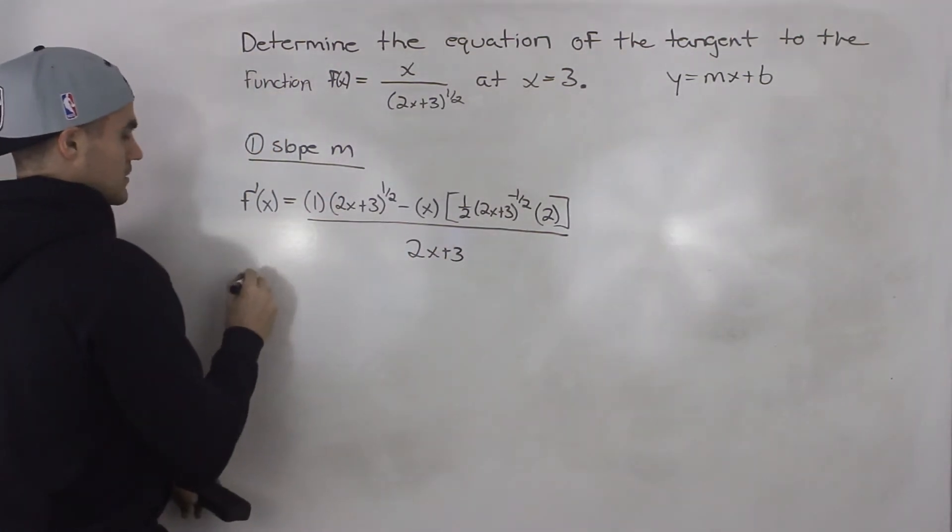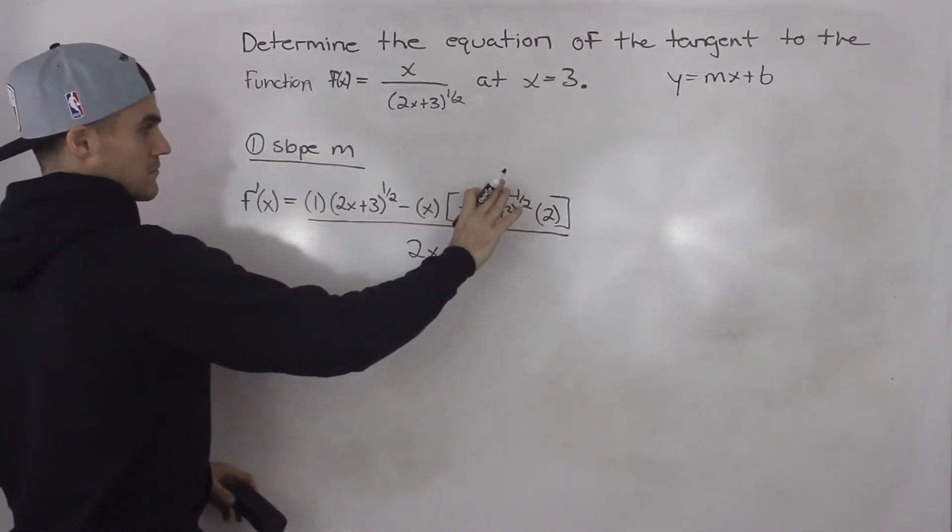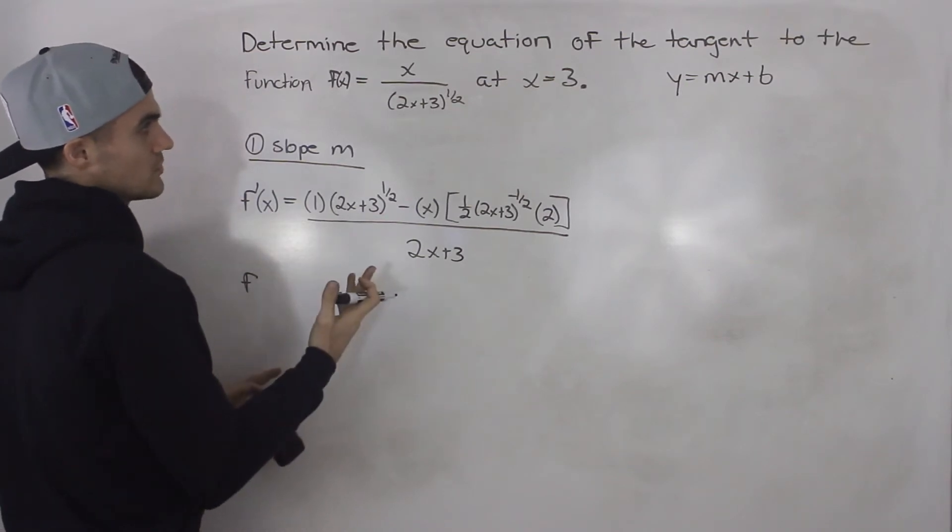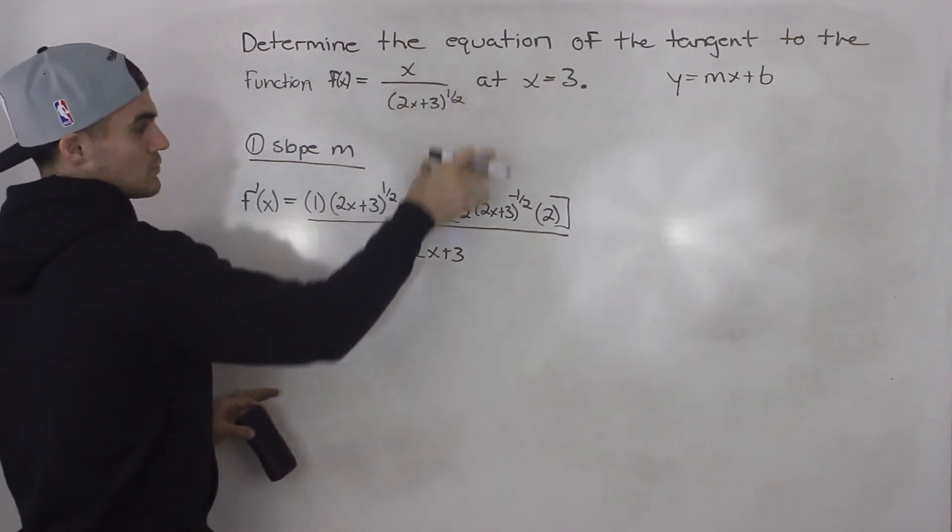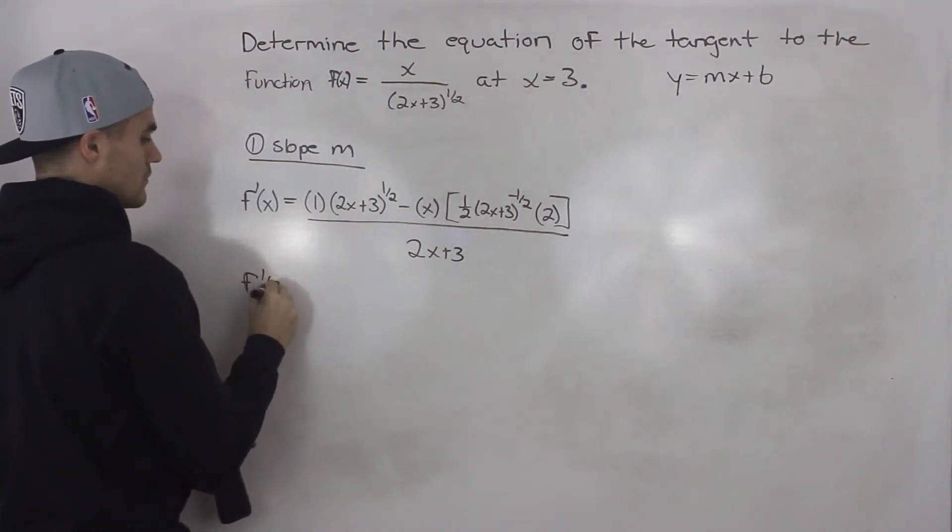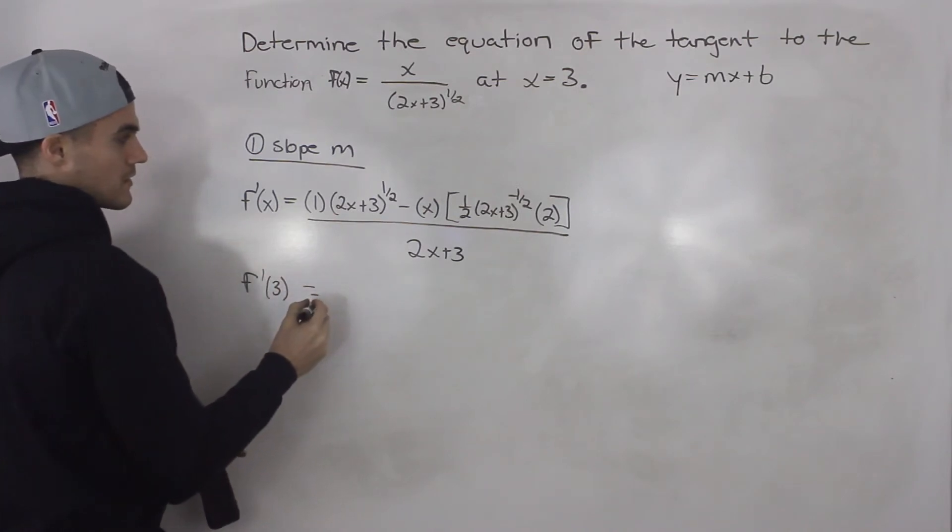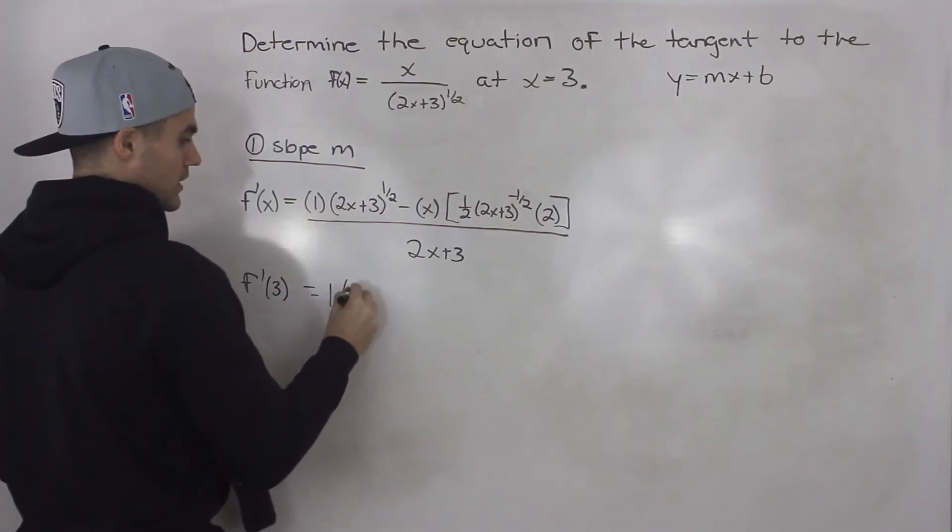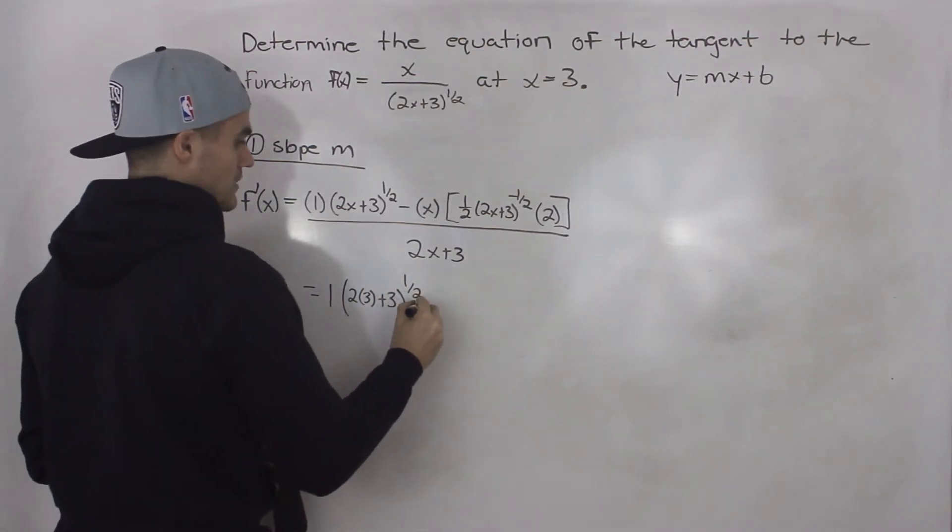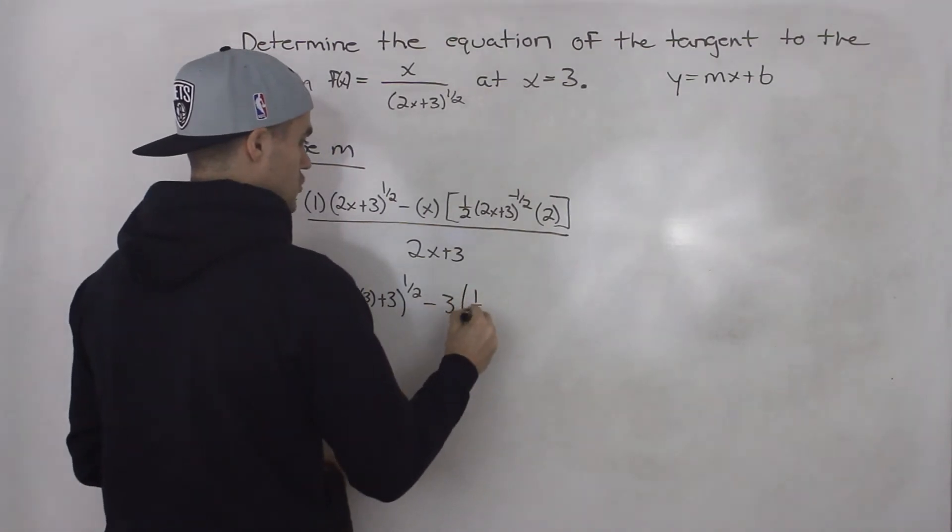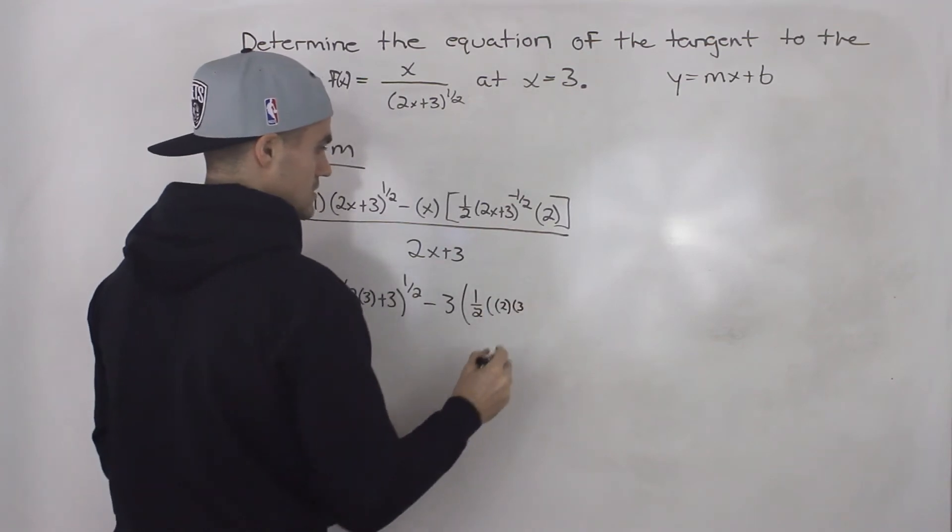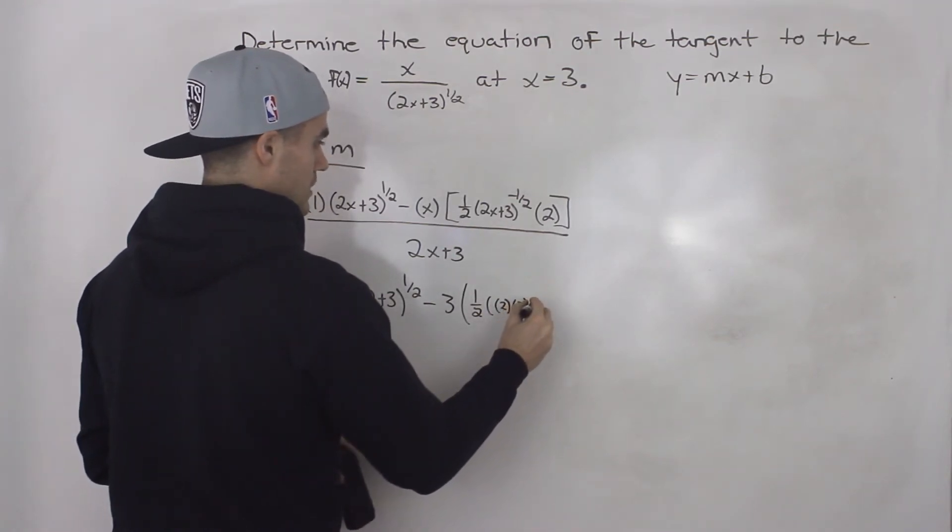So we have this expression here for the derivative. And in my opinion, you shouldn't simplify this, because then you increase your chances of making a potential mistake. Because we're not finding the derivative, we're finding the equation of the tangent, we just have to use the derivative and plug in our x value of 3. We have to find the derivative at an x value of 3. So in my opinion, you should just plug in 3 for all the x values in the non-simplified derivative. Don't try to simplify it, because you end up increasing your chance of making a mistake.